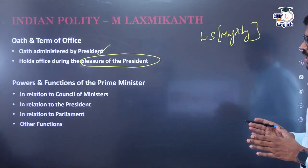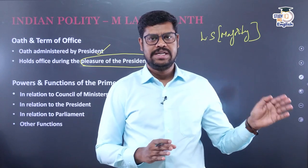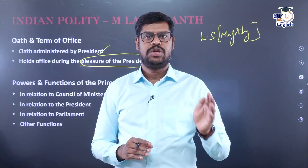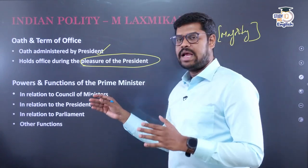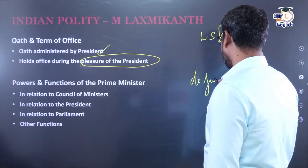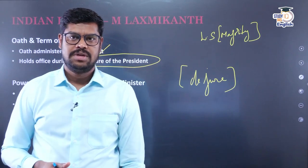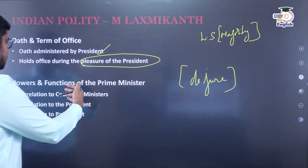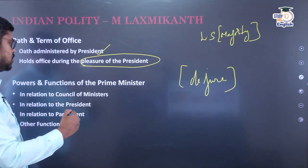Under the Constitution of India, although the President is the head of the union executive, he is only a nominal executive — an executive only for namesake. The real executive is the Prime Minister, who heads the Council of Ministers. The Prime Minister is also called the de facto head. He is the one controlling and calling all the shots, also heading the Council of Ministers.